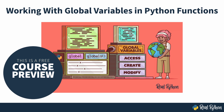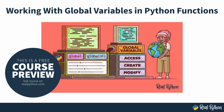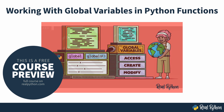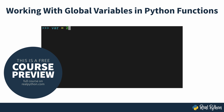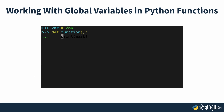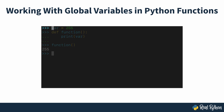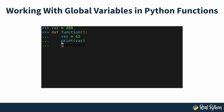Working with global variables in Python functions. A global variable is a variable that you can use from any part of a program, including within functions. Using global variables inside your Python functions can be tricky. You'll need to differentiate between accessing and changing the values of the target global variable if you want your code to work correctly.